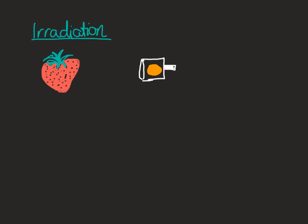Let's have a look at an example of irradiation. Here's a strawberry, and this orange bit here is a radioactive material that is emitting radioactive decay particles as it decays. It's in a protective casing. You can see the decay particles hitting the strawberry — so we would say the strawberry is being exposed to radiation, meaning it is being irradiated.